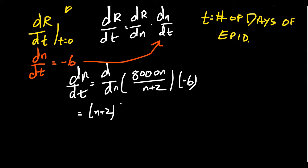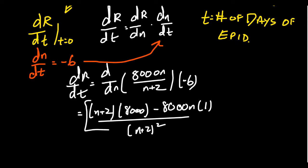Low d-high, which is the derivative with respect to N of 8,000N, which is 8,000, minus high d-low, which takes the derivative of the bottom, it's going to get a one, square the bottom. And then make sure you don't forget this factor of negative six that's floating around.